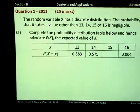In question 1, part A, we are told the random variable X has a discrete distribution. The probability that it takes a value other than 13, 14, 15 or 16 is negligible. Because it is discrete, it means it can only take on these values. It cannot take on values between these. If it could, then it would be a continuous distribution.